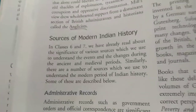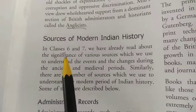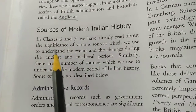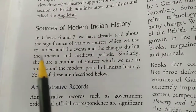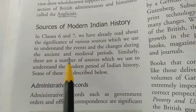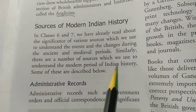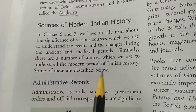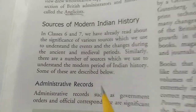Now we will learn about sources of modern Indian history. In classes 6 and 7 we have already read about the significance of various sources which we use to understand the events and changes during the ancient and medieval period. Similarly, there are a number of sources which we use to understand the modern period of Indian history. Some of these are described below.